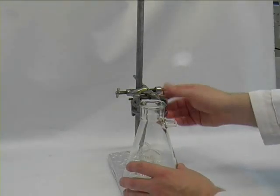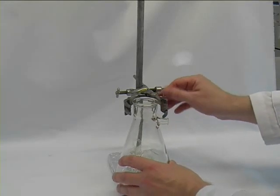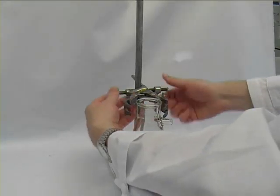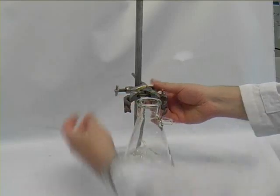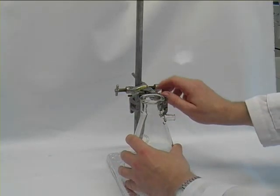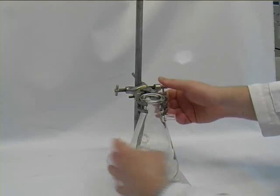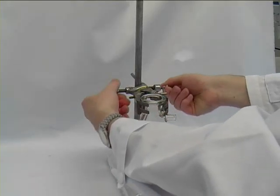That's our Büchner flask. That's a thick-walled conical flask, which we have to clamp into the retort stand in such a way that the whole equipment is above the plate. Otherwise, the whole setup would be unstable.